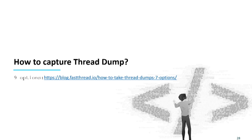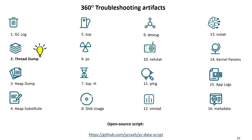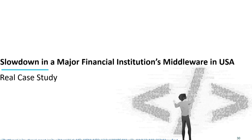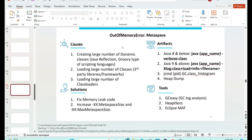You can also use the same open source script — it captures a thread dump as well. I want to show you a real problem that happened in a major financial institution in the U.S. This is a real case study using the thread dump captured when the problem was occurring. For analyzing a thread dump, FastThread is one tool, or you can use text editors — though that's a bit tedious. Now I'm uploading the thread dump.